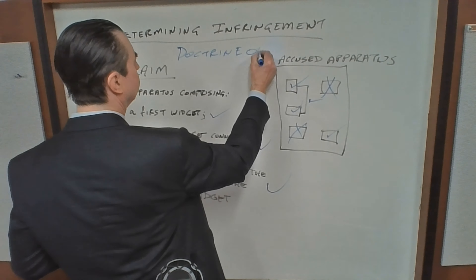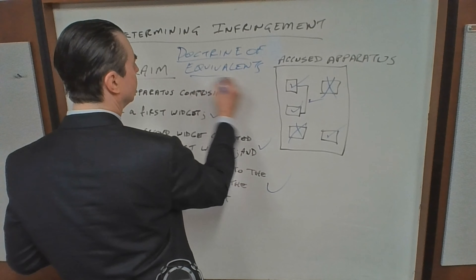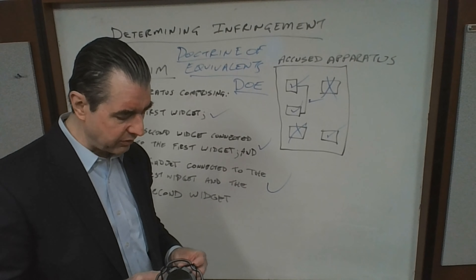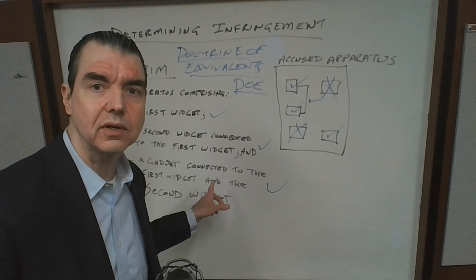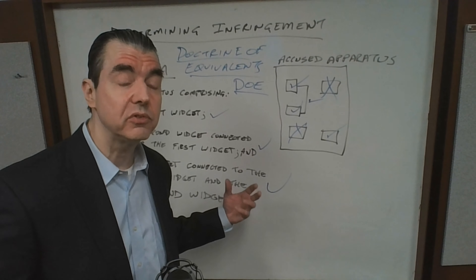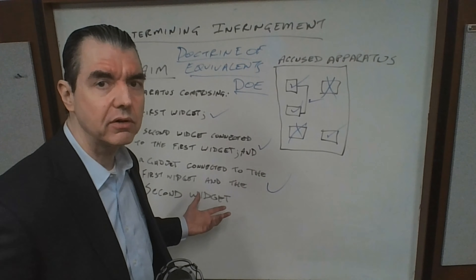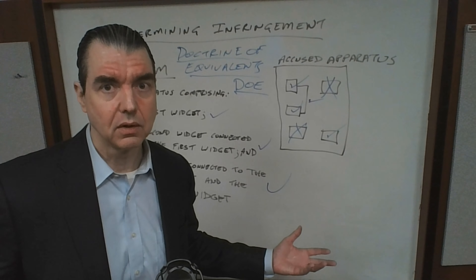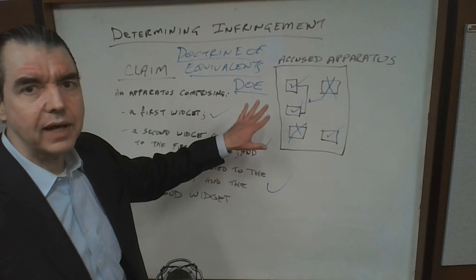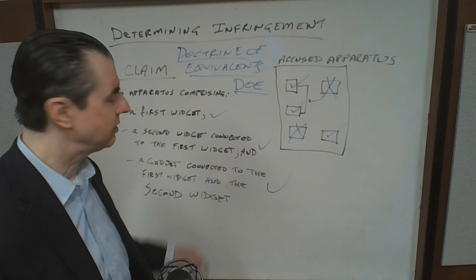The second type of infringement is called infringement under the doctrine of equivalence, referred to by the acronym DOE. In order to infringe by doctrine of equivalence, even if one of those limitations isn't literally present, if there's another element that performs substantially the same function in substantially the same way and achieves substantially the same result, then that may be infringing under the doctrine of equivalence.